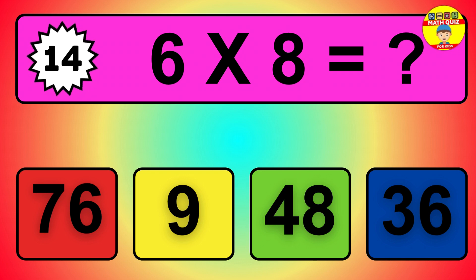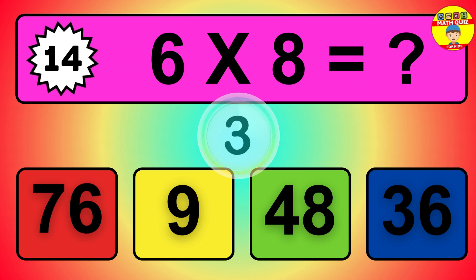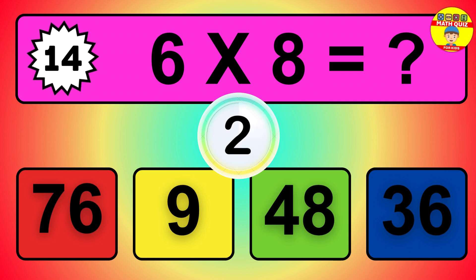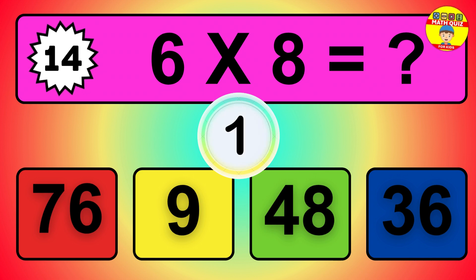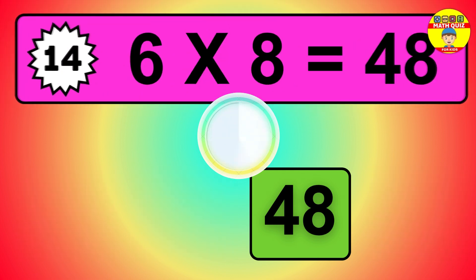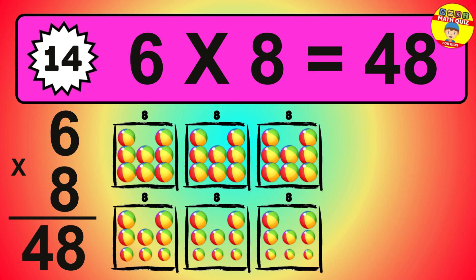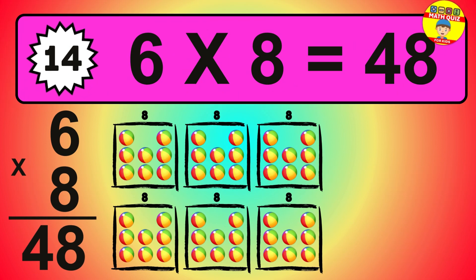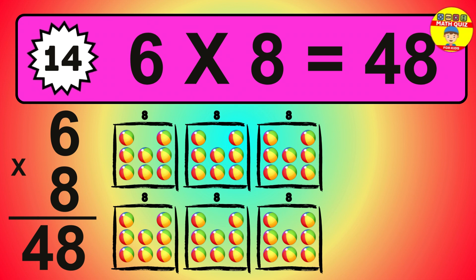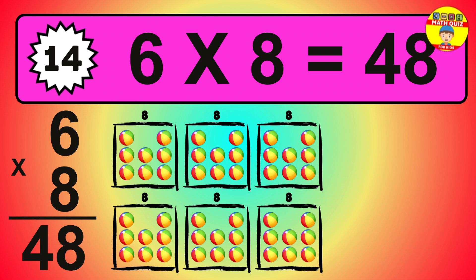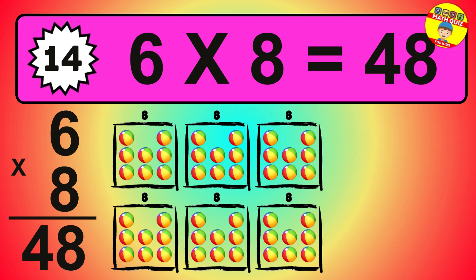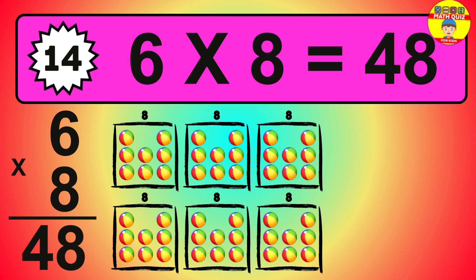Question 14. 6 times 8 equals what? The answer is 6 times 8 is 48. To calculate, we have 6 groups with 8 balls each one. So how many balls do we have? 48 balls.